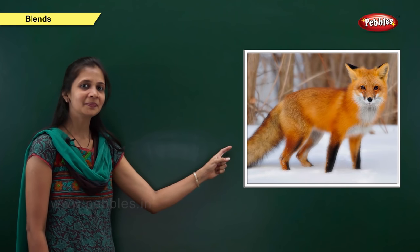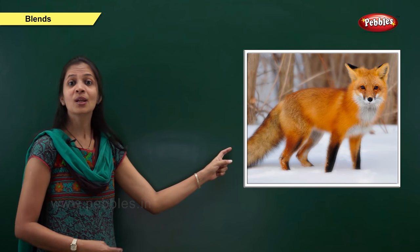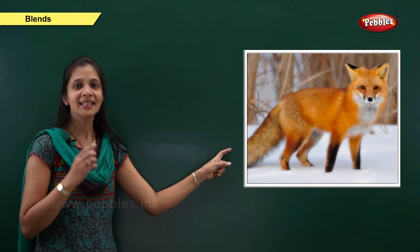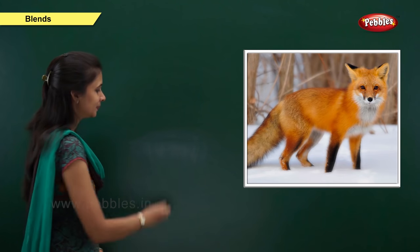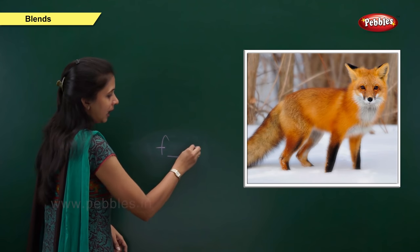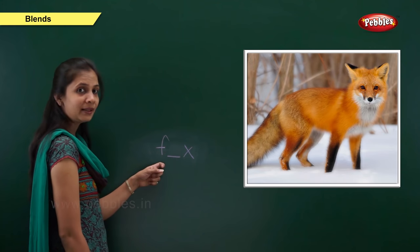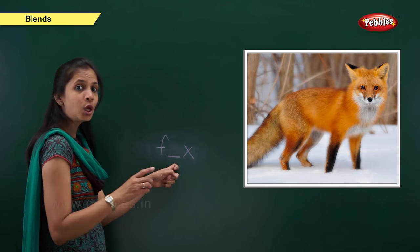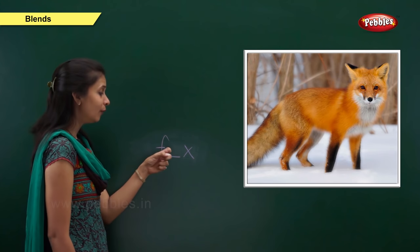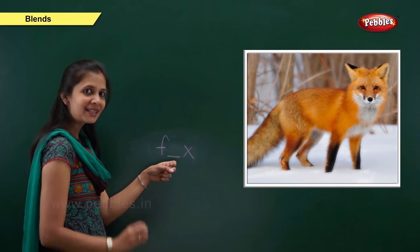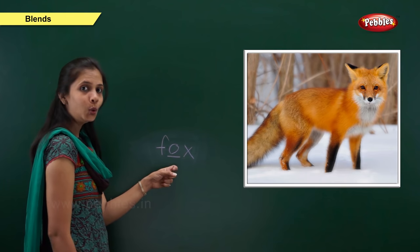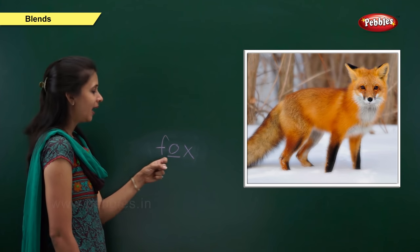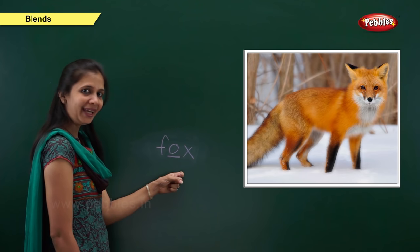Next one. Which picture is this? Yes, it is fox. What is the sound of this word? The beginning sound is 'f' and the ending sound is 'x'. So the letter is f and the ending letter is x. What about the middle sound? The vowel is o. O says 'o'. So: f, o, x — fox.